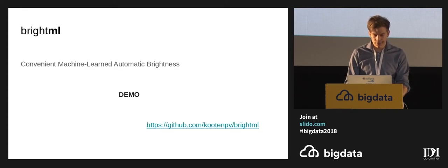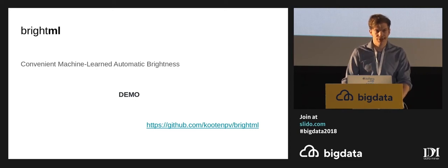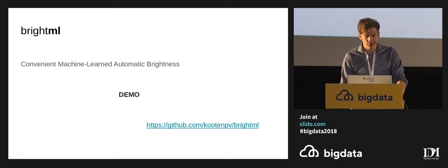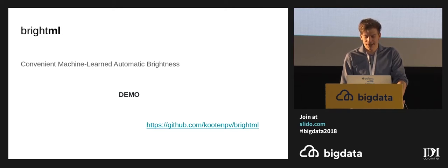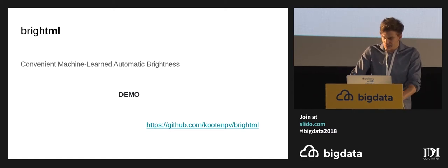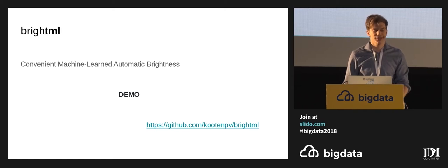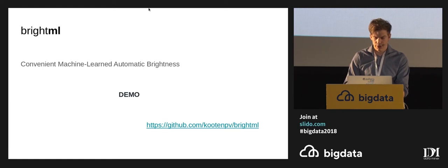Now let's go over some examples of when you would use machine learning. This is BrightML — convenient machine-learned automatic brightness. By now it's on your phones and you don't notice it, but on computers it's different. In my particular case I have a MacBook but I installed Arch Linux on it — I cannot recommend this, don't try this at home. Working at night I noticed differences in white: when I look at the browser it's very bright, but when I look at code which is really dark it doesn't take this into account. I wanted to do something with machine learning on this, with zero configuration — no files to move or buttons to click.